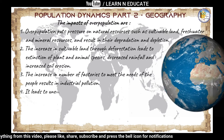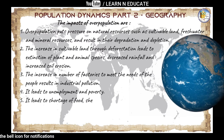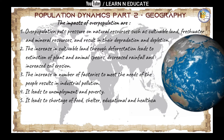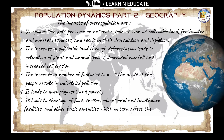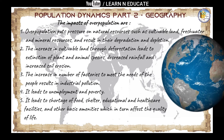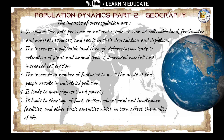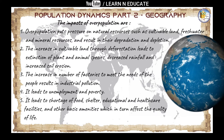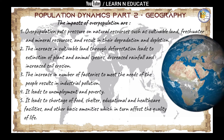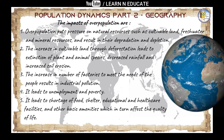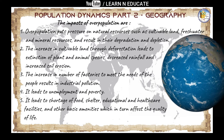The increase in the number of factories to meet the needs of more people results in industrial pollution. Overpopulation also leads to unemployment and poverty — if there are more people, not everyone can be employed, leading to poverty. Furthermore, it leads to shortage of food, shelter, educational and healthcare facilities, and other basic amenities, which in turn affect the quality of life.